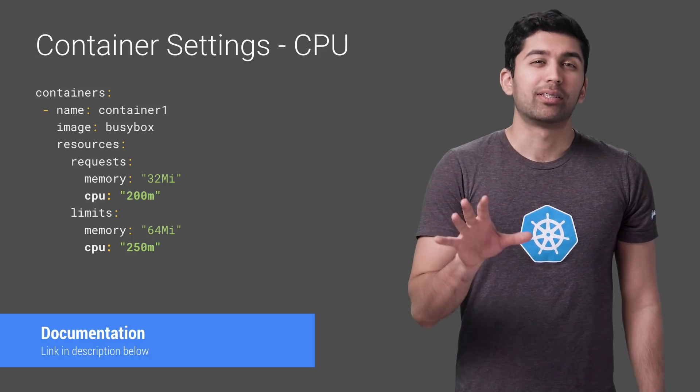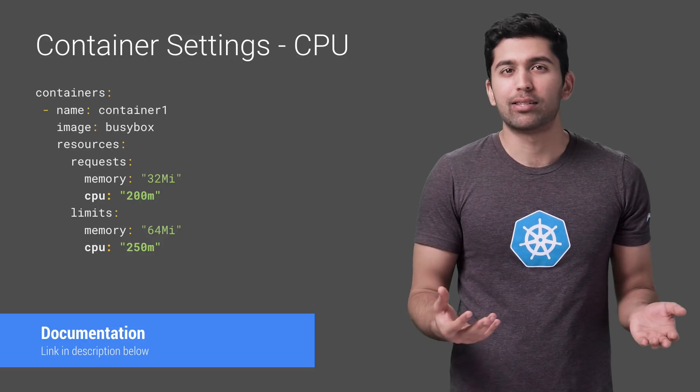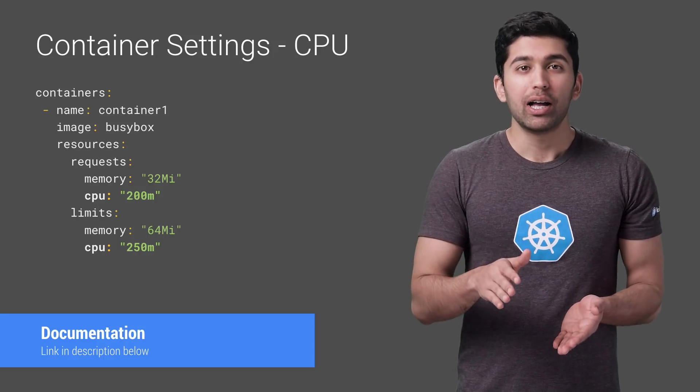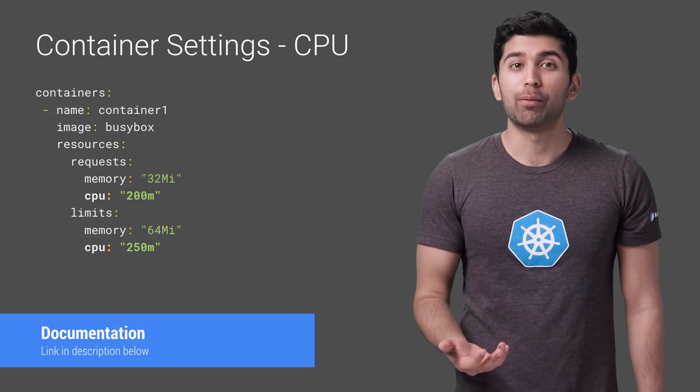Unless your app is specifically designed to take advantage of multiple cores — things like scientific computing and some databases — it's usually a best practice to keep the CPU request at one or below, and then run more replicas to scale it out. This gives the system more flexibility and reliability. When it comes to CPU limits, CPU is considered a compressible resource. If your app starts hitting your CPU limits, Kubernetes will start to throttle your container, artificially restricting your CPU and giving your app potentially worse performance. However, it won't be terminated or evicted.